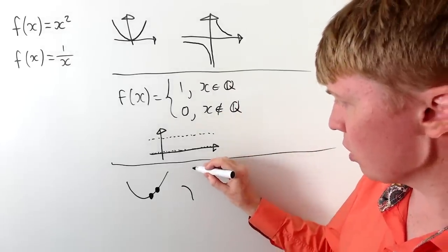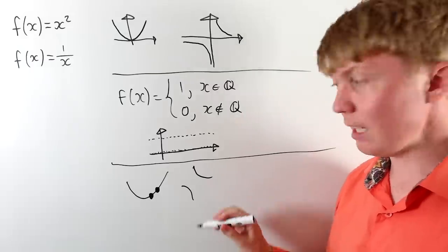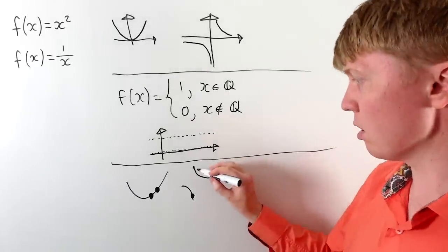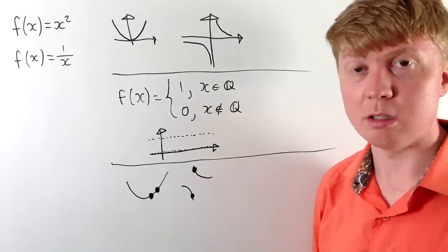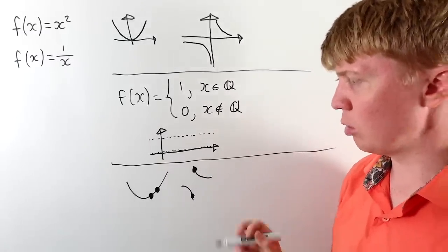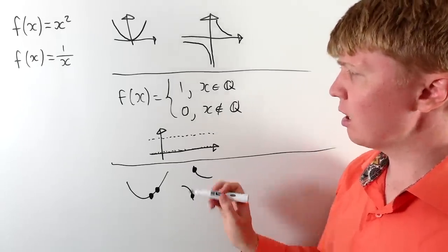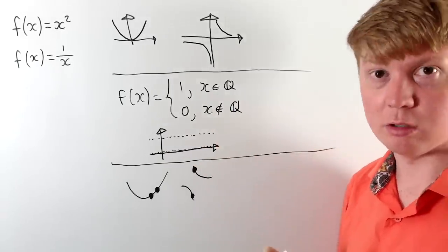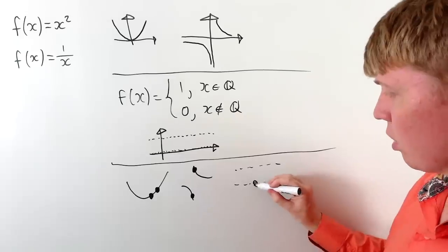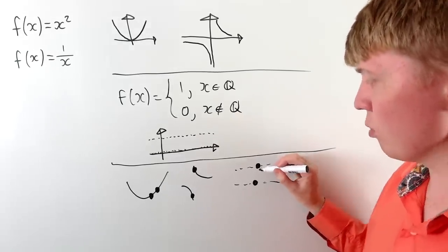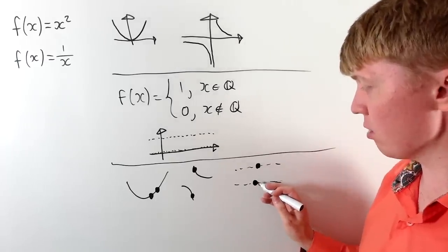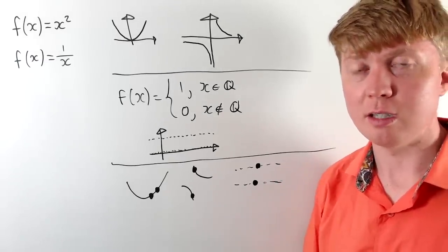For 1 over x, we have two separate pieces. If we take a negative value of x really close to 0 and compare it with a positive value really close to 0, the difference between the x values is very small, but the difference between the outputs would actually be really big, because the graph isn't connected there. Similarly, for the function that's 1 on rational inputs and 0 otherwise, you could take two points right next to each other and the difference in output would be 1 — you can have as small a difference as you like between x values and still get a difference of 1.